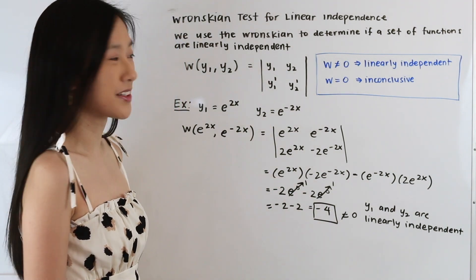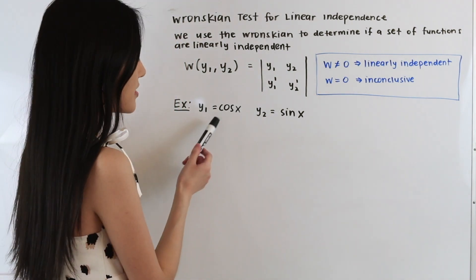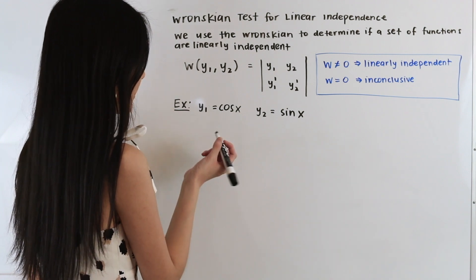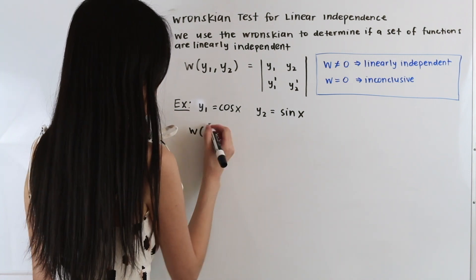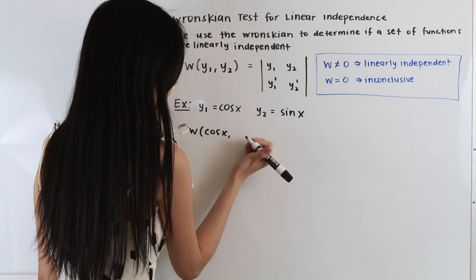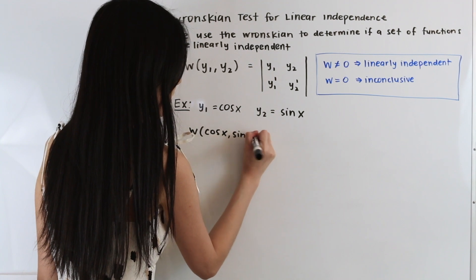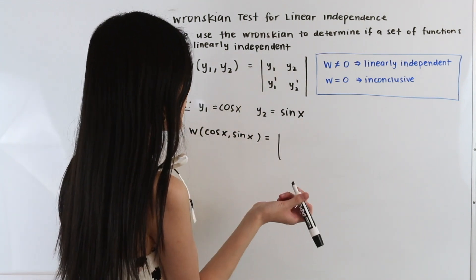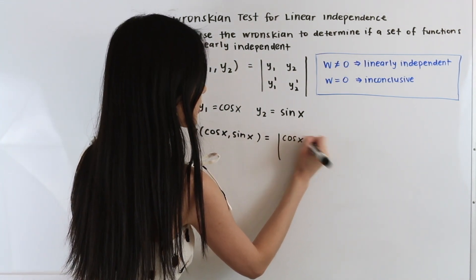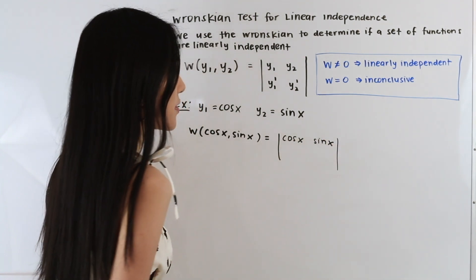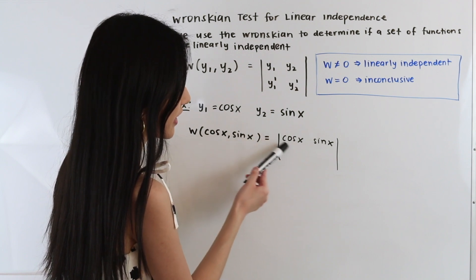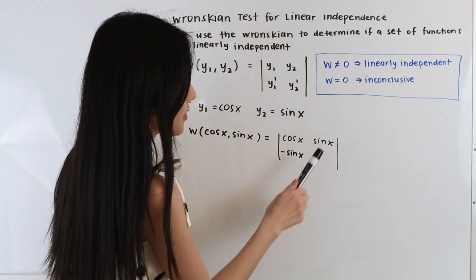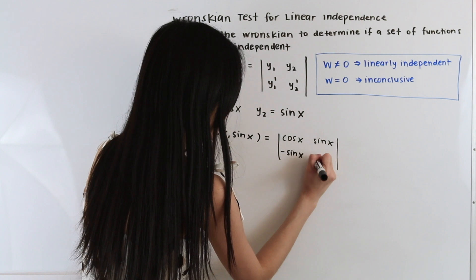Let's take a look at one more example. Here we have y1 equal to cos of x and y2 equal to sin of x. Let's plug these into our formula for the Wronskian. So we have the Wronskian of y1, which is cos of x, and y2, which is sin of x. This equals the determinant with cos of x and sin of x in the first row. In the second row go the derivatives: the derivative of cos of x is negative sin of x, and the derivative of sin of x is cos of x.